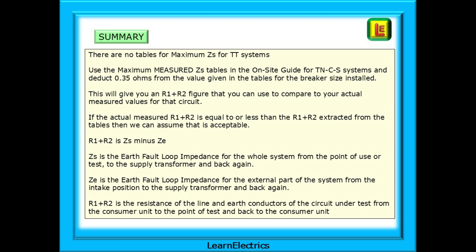R1 plus R2 is ZS minus ZE. ZS is the earth fault loop impedance for the whole system from the point of use or test to the supply transformer and back again. ZE is the earth fault loop impedance for the external part of the system from the intake position to the supply transformer and back again. R1 plus R2 is the resistance of the line and earth conductors of the circuit that is under test from the consumer unit to the point of test and back to the consumer unit.